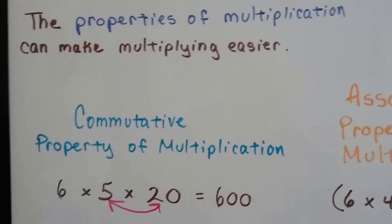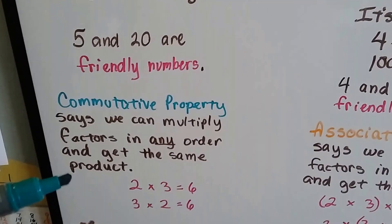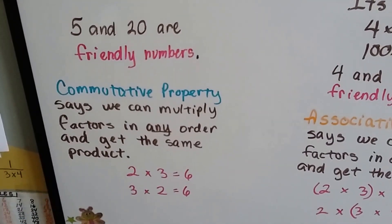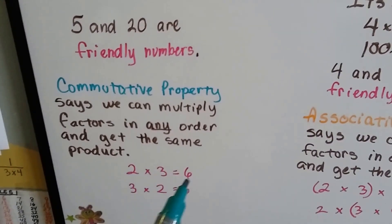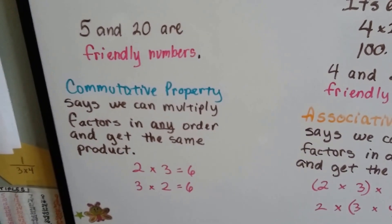The commutative property of multiplication says we can multiply factors in any order and get the same product. So if we have 2 times 3, that equals 6, but we can also do 3 times 2 and get 6.